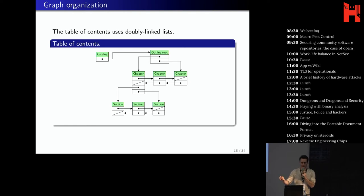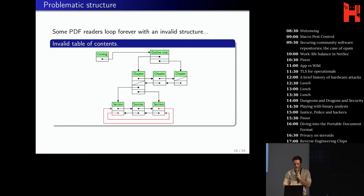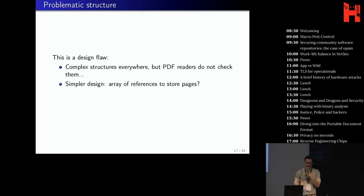And so there is a hierarchy of chapters and sections. And this forms also a tree, but at the same level. You can see that they use a doubly linked list here between chapters of the same level. And the problem is, if you write a malicious document with just a loop in here, instead of a normal list, then some PDF reader will loop forever with just such an invalid structure, which is kind of annoying because it's very simple to do. And I think that this is a design flaw of the specification because such complex structures are everywhere, but PDF readers don't care about checking them. And then you can easily have a denial of service. So a simpler design would just be like, use an array of references, for example, to store the pages. It would be much simpler than a tree.